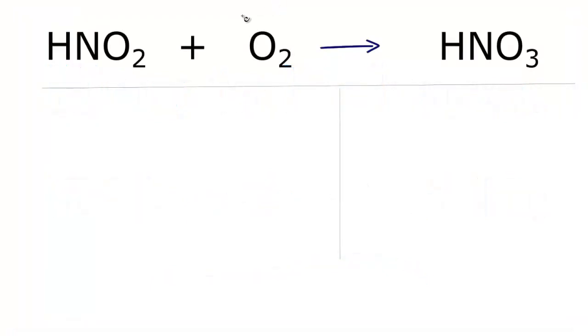We'll start. Let's count the atoms up on each side of the equation. Hydrogen, I have one. Nitrogen, there's one of those. And then oxygen, I have two right here, but I've got to add these two over here on the O2. That gives me four oxygen atoms on the reactant side.